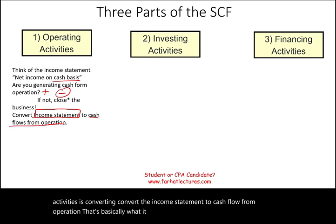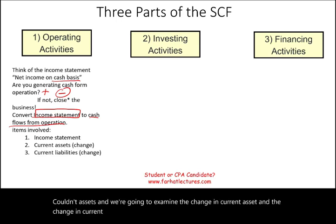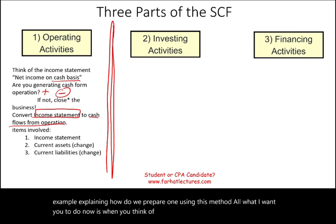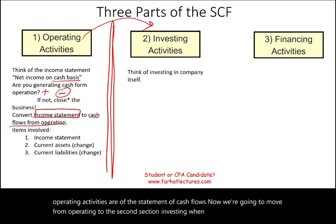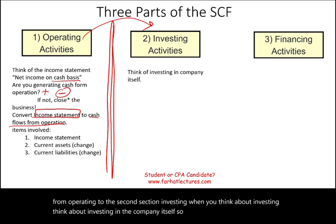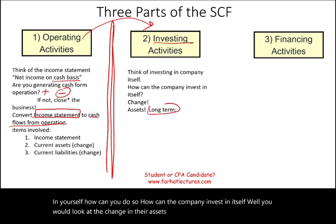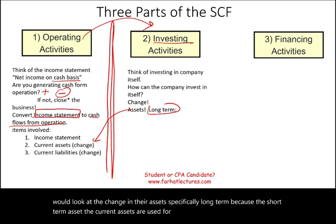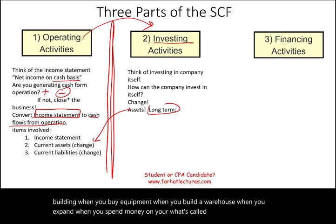Now moving from operating to the second section: investing. When you think about investing, think about investing in the company itself. You would look at the change in long-term assets, because current assets are used for operating. When you buy a new building, equipment, a warehouse — when you spend money on capital assets, long-term assets — you are investing in your business. Think of long-term investments. Also, when you buy investments in other companies — for example, when Microsoft buys LinkedIn, that's an investment — you are investing in the company itself.